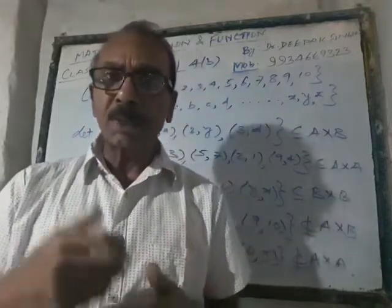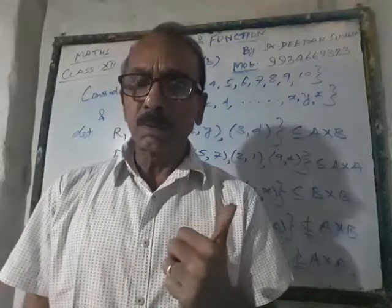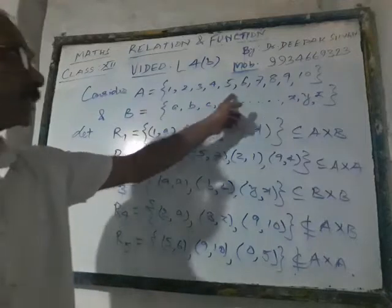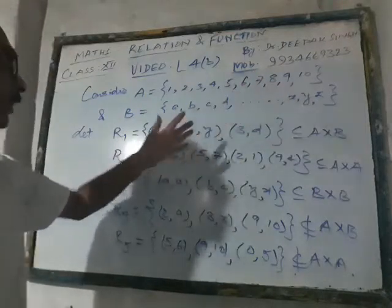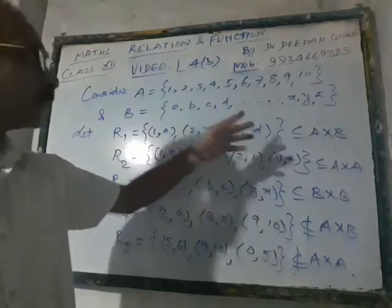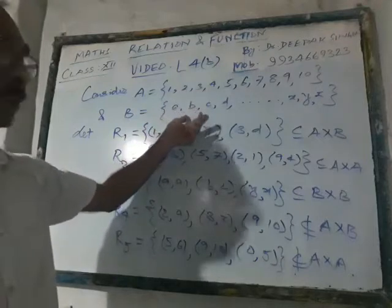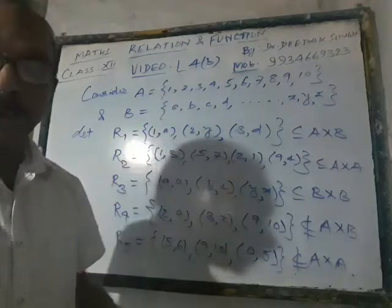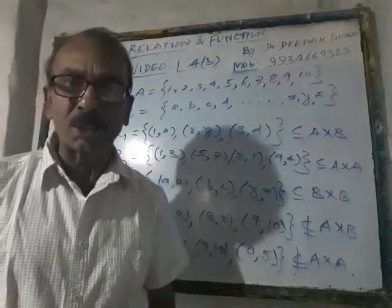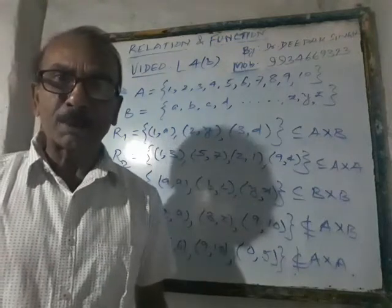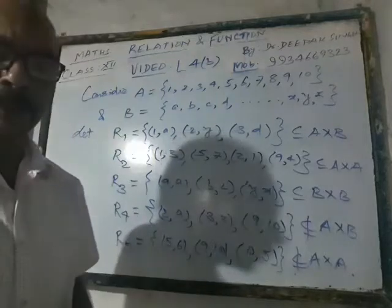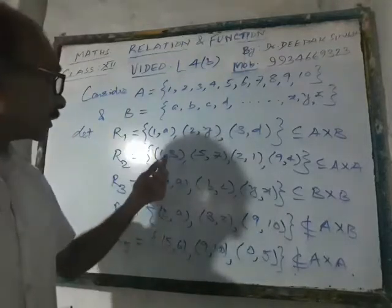For that, I just try to make you understand with the help of some examples. Just watch over here. Suppose A contains these 10 elements — 1 to 10, ten natural numbers — and B contains all English alphabets, that means A to Z. A has 10 elements, B has 26 elements, so naturally A cross B will have 260 elements. It is quite a tedious job to write all those 260 pairs on the notebook.